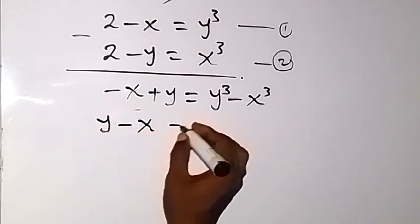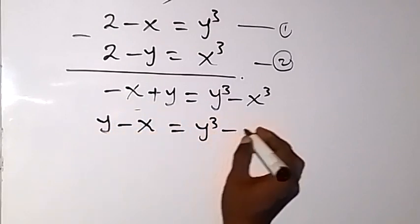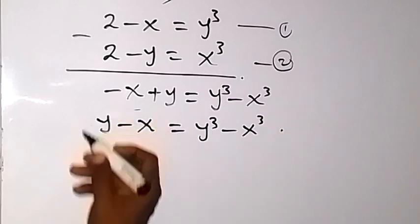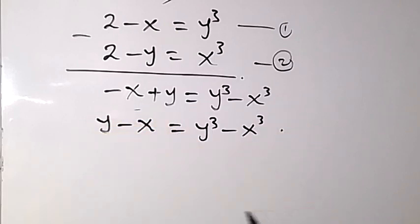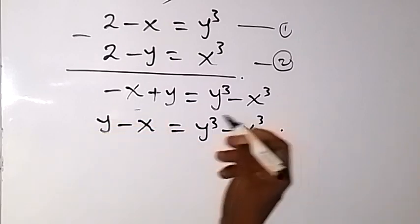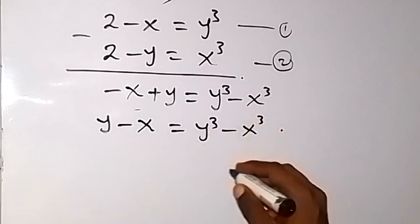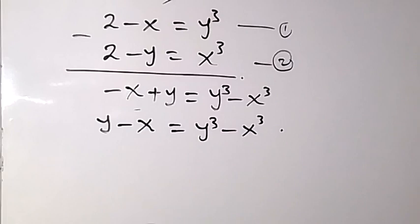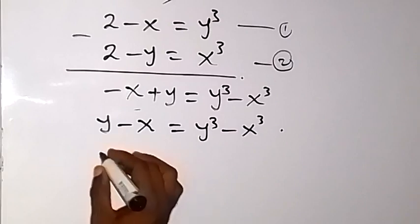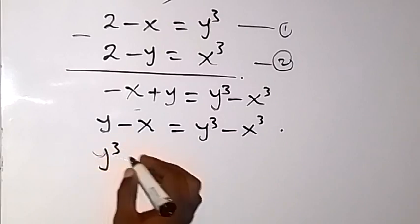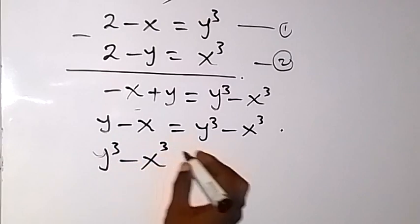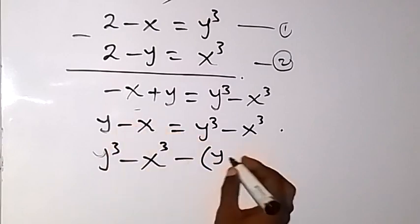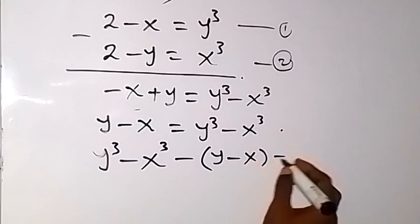We can rewrite this as y minus x equals y cubed minus x cubed. From here, let's take everything to one side: y cubed minus x cubed minus (y minus x) equals zero.